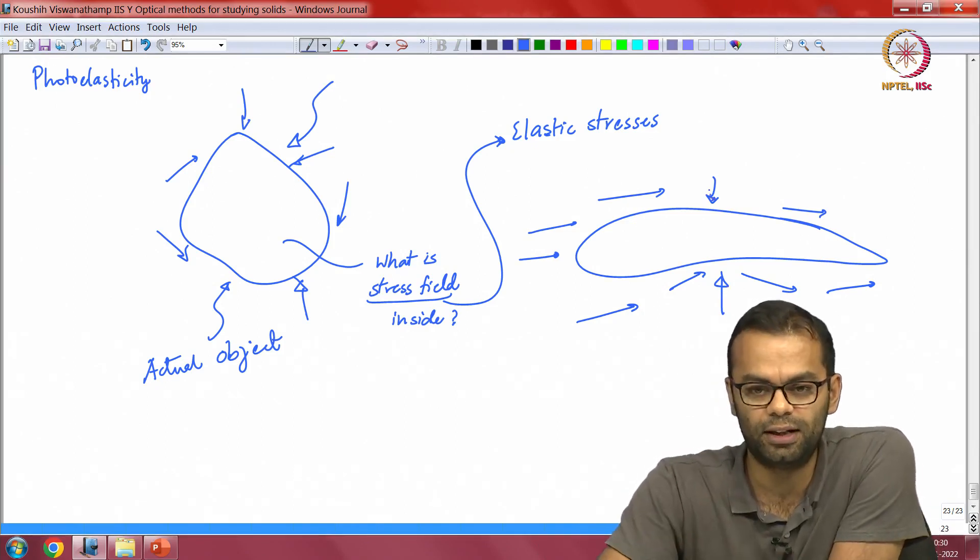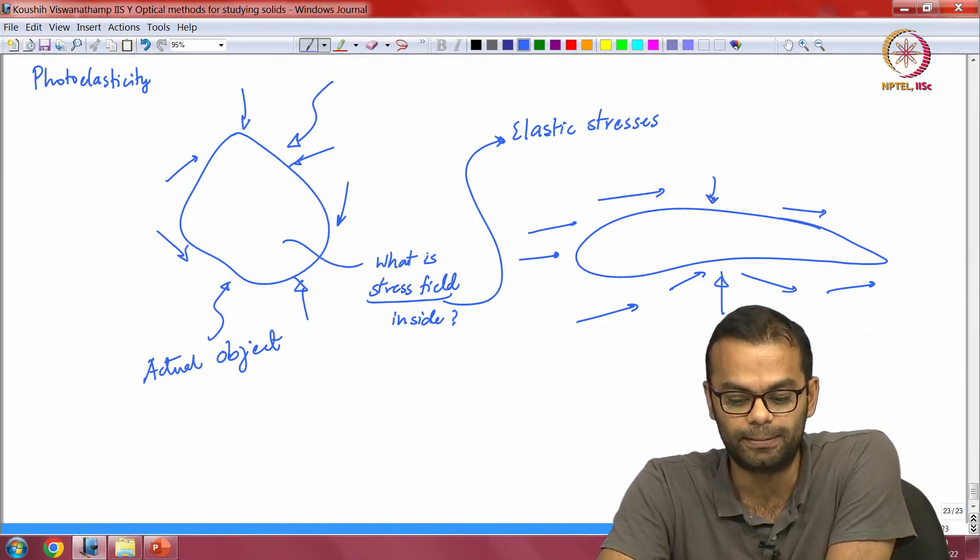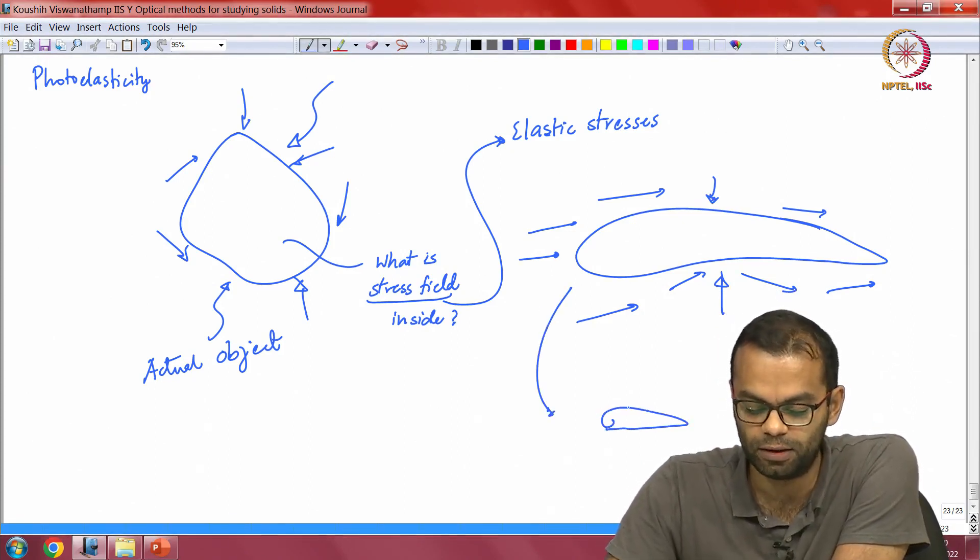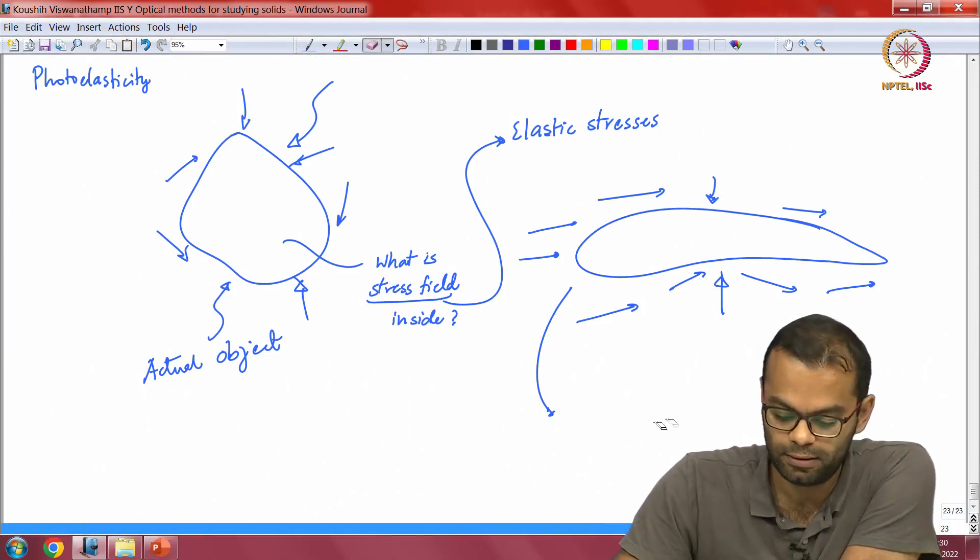This was historically why photoelasticity was used. People would make a smaller scale version of this, something that looked like this, and this would be made out of an optically transparent material. Then you would subject this to the same forces, scale down of course,